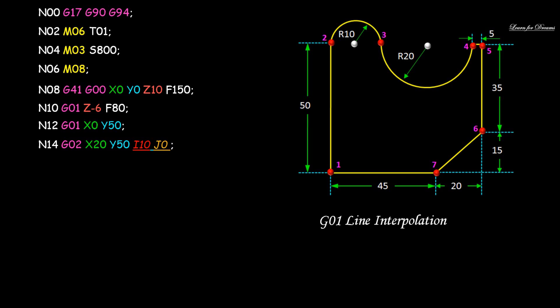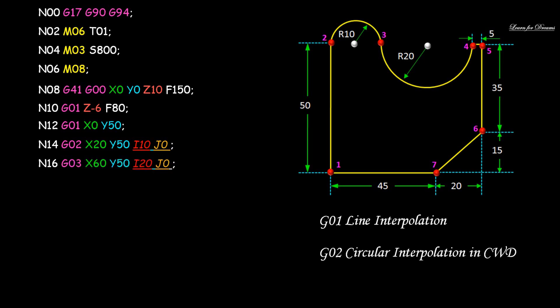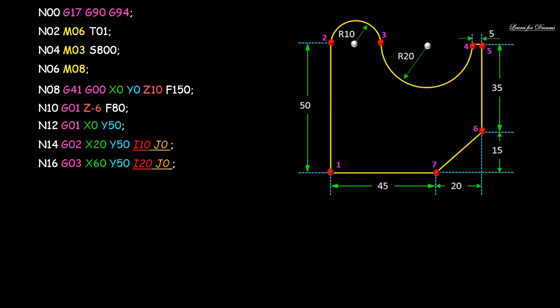We have given the radius values: for the X direction we use I, and for the Y direction we use J. From point 2 to point 3, the path is in the clockwise direction, so we use G02. From point 3 to point 4, the circular path is in the anti-clockwise direction, so we use G03.